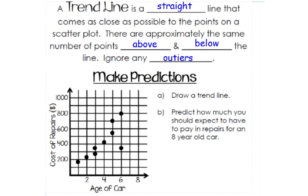A trend line is a straight line that comes as close as possible to the points on a scatter plot. There are approximately the same number of points above and below the line, and you're going to ignore any outliers.